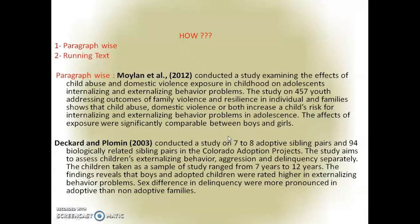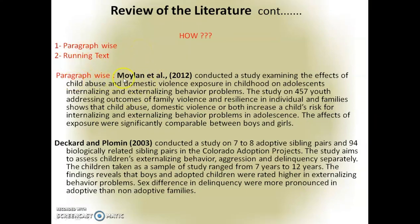Now let's study how to write the review of literature. It can be written in two ways: paragraph-wise and running text. In paragraph-wise writing, as you can see on screen, the surname of the first (prime) author is written, followed by 'et al.' if there are more than two writers, then the year the study was conducted in parentheses, followed by a brief description of the study — sample size, how it was conducted, results, and conclusions — all within a paragraph.